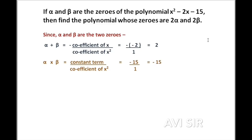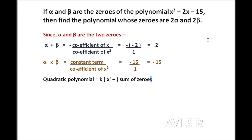Now we have alpha plus beta and alpha into beta. The question asks us to find a polynomial whose two zeros are 2 alpha and 2 beta. We know that any quadratic polynomial equals k times x squared minus the sum of zeros times x plus the product of zeros.